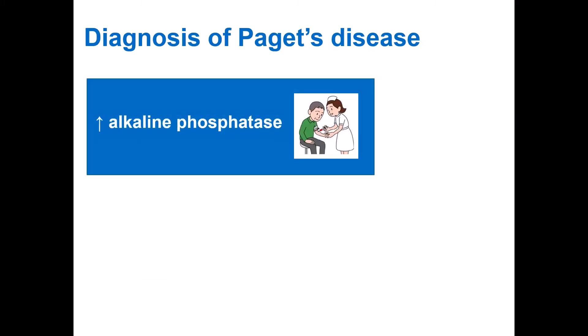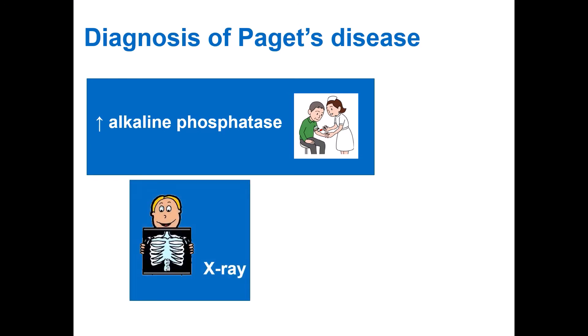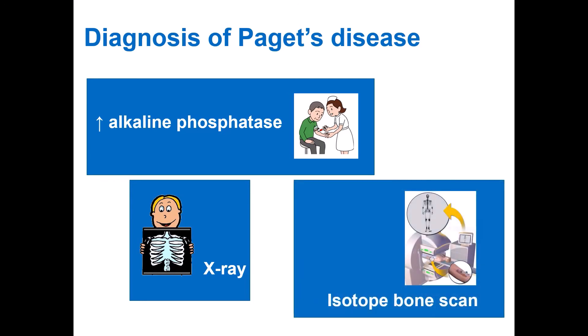The diagnosis of Paget's disease may be suggested by an isolated elevation of alkaline phosphatase, which is an enzyme produced by osteoblasts detected in a simple blood test. An x-ray and an isotope bone scan can also pick up Paget's disease. In clinical practice, usually all three tests are indicated to diagnose and assess the activity and extent of Paget's disease.